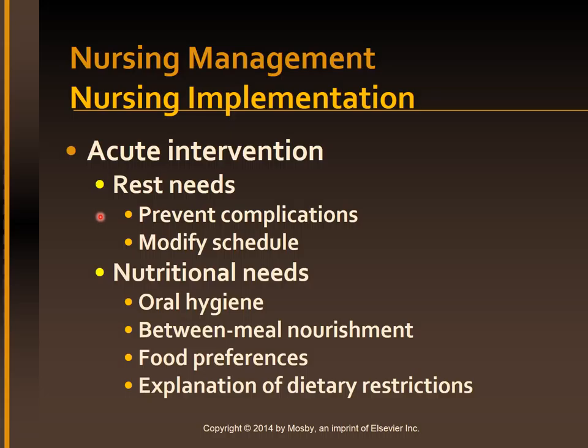Anorexia, nausea, and vomiting, pressure from ascites, and poor eating habits all create problems in maintaining adequate nutrient intake. Oral hygiene before meals may improve the patient's taste sensation. Make nourishments available between meals so they can be taken at times when the patient can best tolerate them. Provide food preferences whenever possible, and explain the reason for any dietary restrictions to the patient and caregiver.